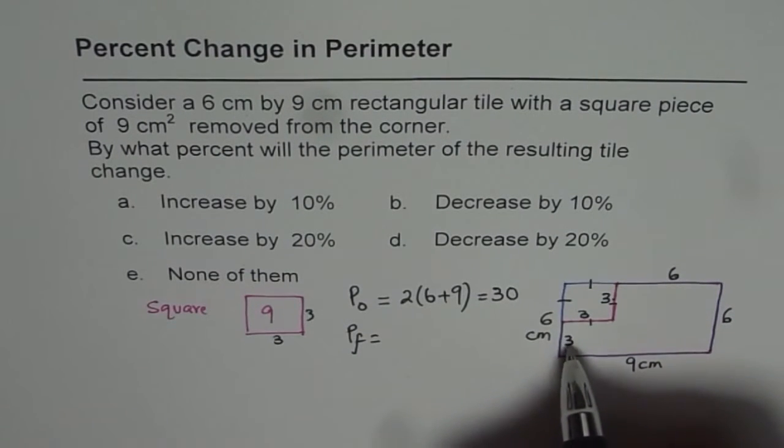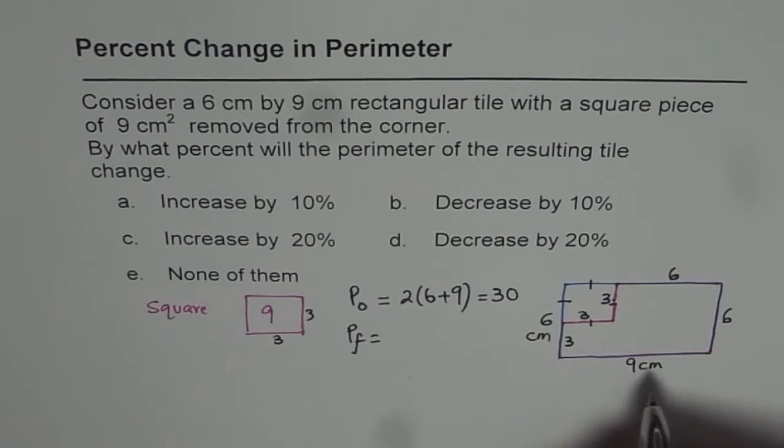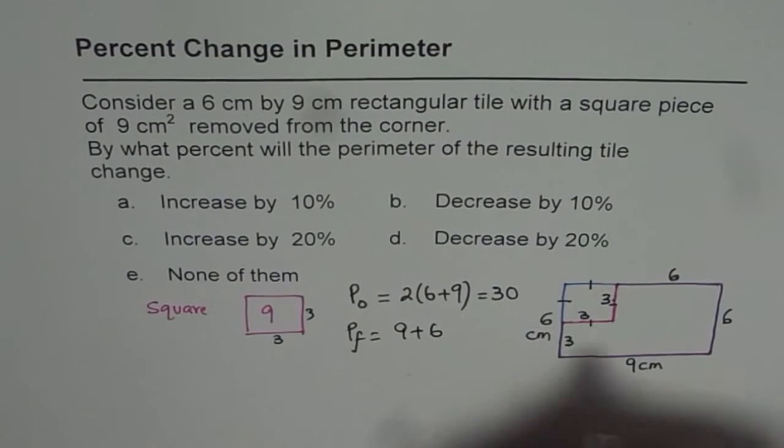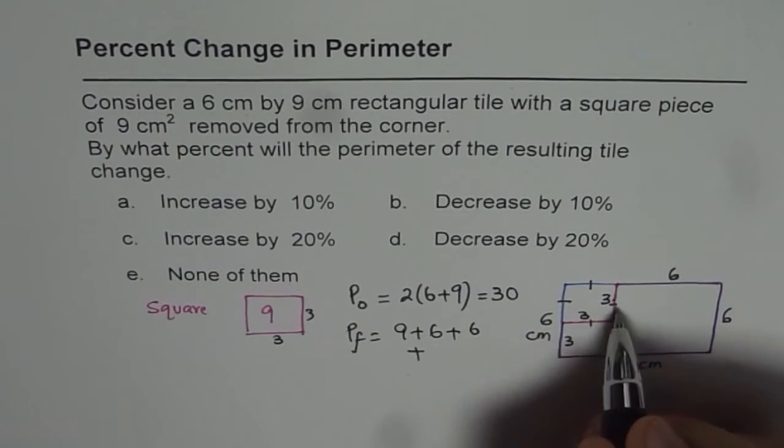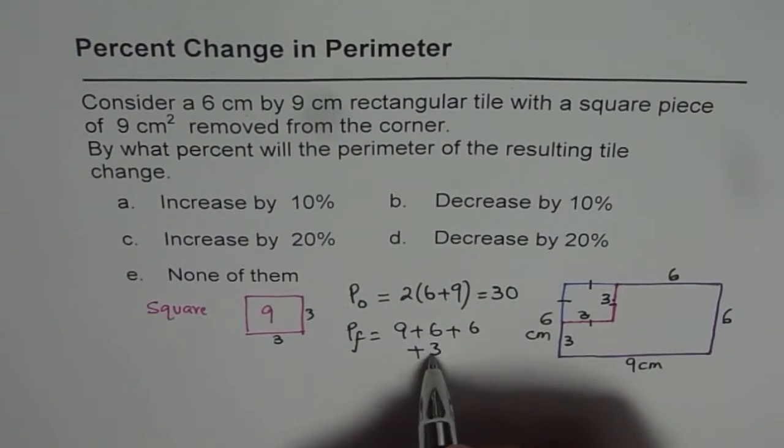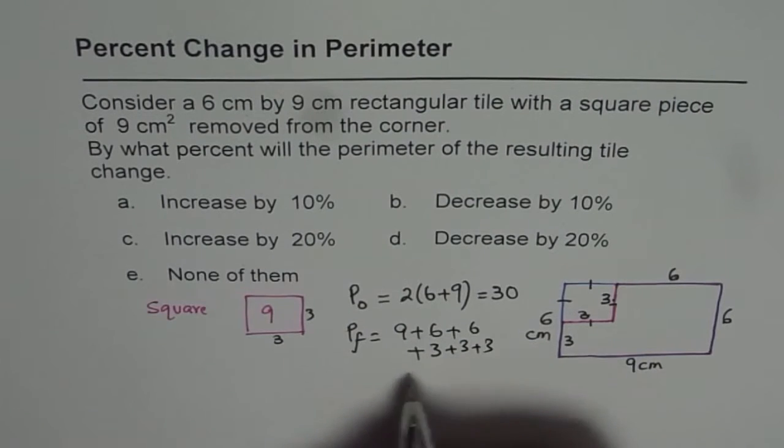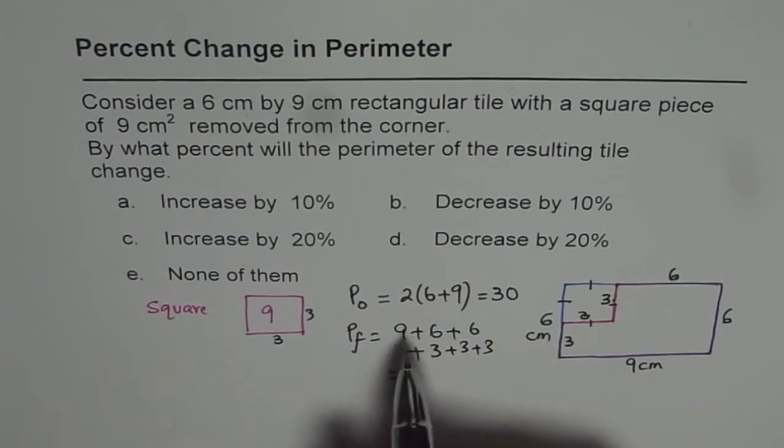And 3 here, 3 plus 3 is also 9. So it is 9 plus 6 plus 6 plus 3, 3 and 3. That is also 30, right? Same.